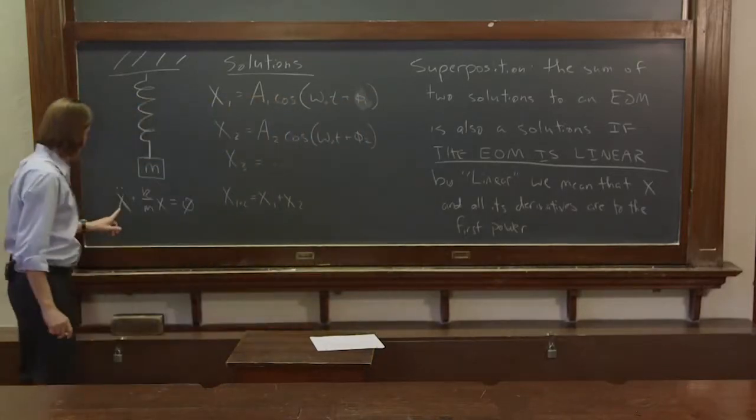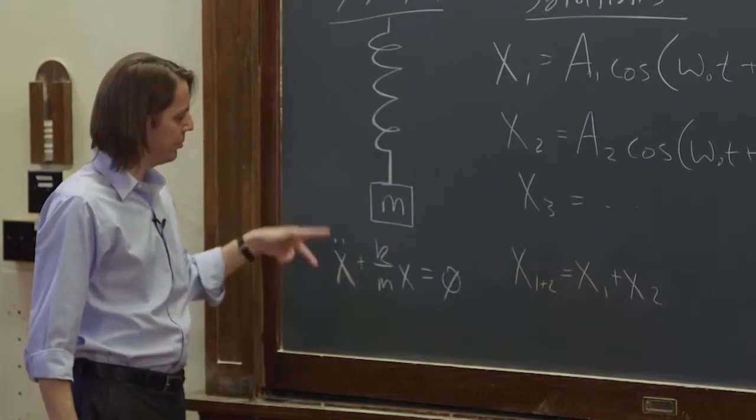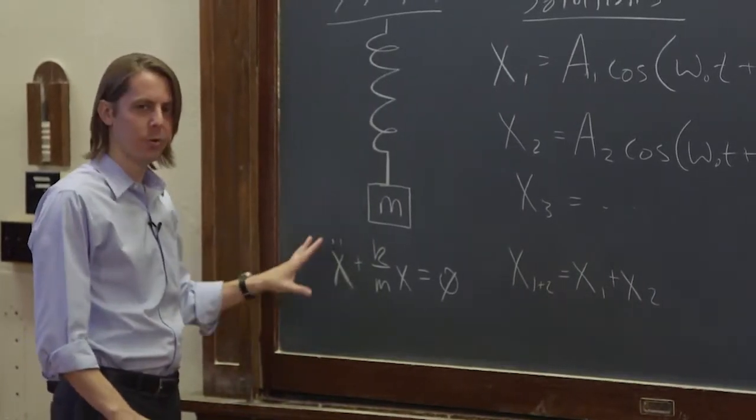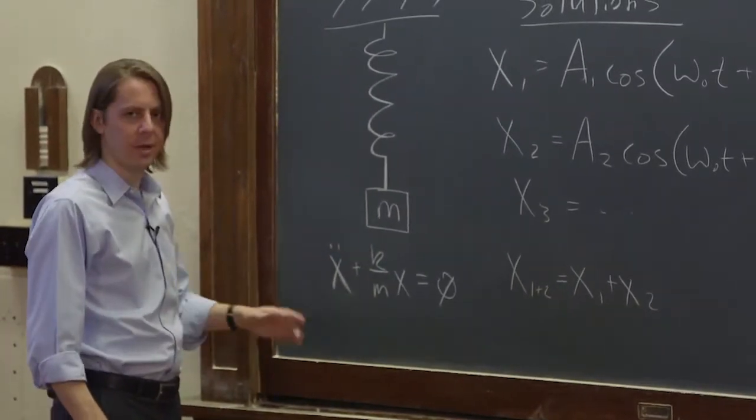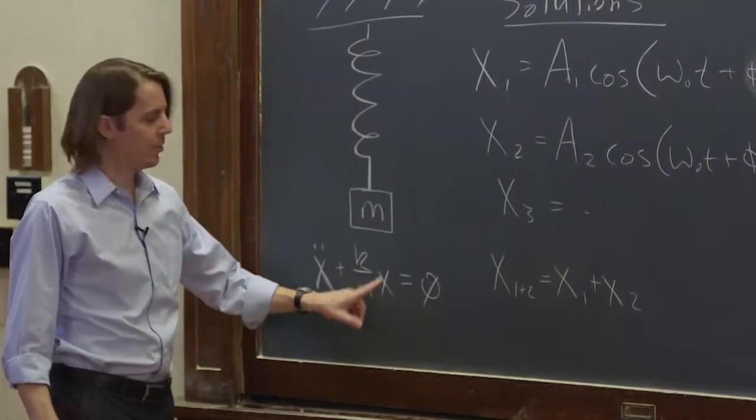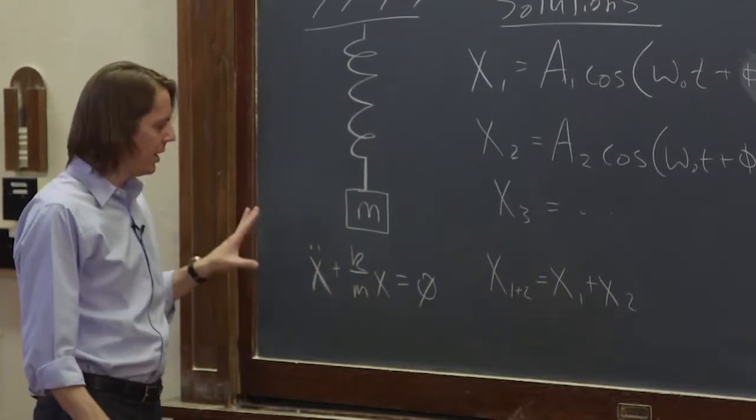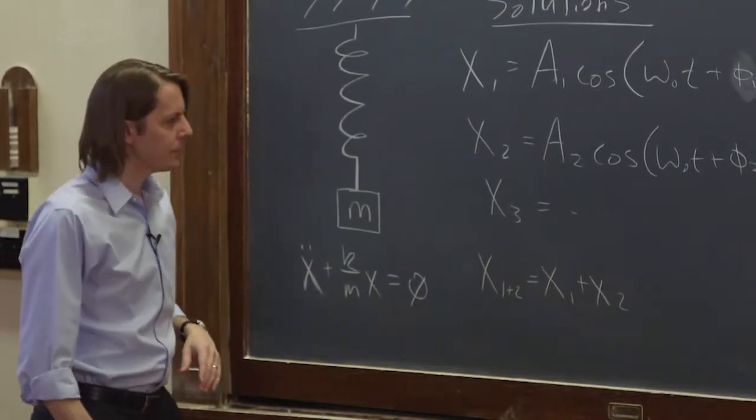And you can see that's true. Here's a derivative of x, the second derivative with respect to time, x double dot, but it's linear. It's not squared. It's not square rooted. It's not e to the x double dot. It's just x double dot. And here's x all by itself, and it's also linear to the first power. So it really just means all the x's, all the independent variables, and their derivatives are linear. And if that's true, then this is true.